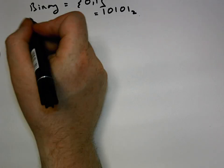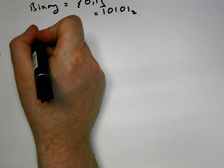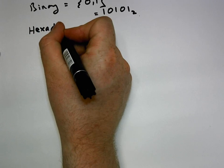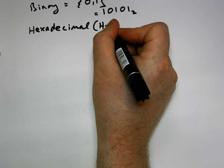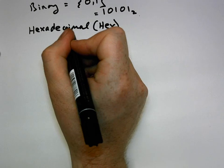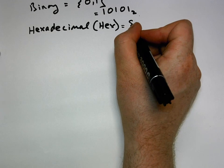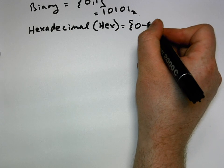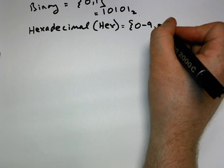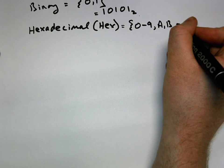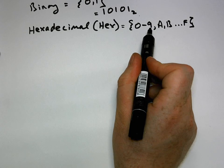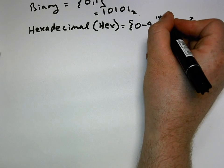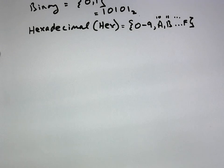But in computer science we have other number systems that we would use quite regularly. One of those systems is the hexadecimal number system. So the hexadecimal number system, we call it hex. And that's simply made up with an alphabet that runs from zero up to nine, just like the decimal number system, and then it goes from A up to F. Where zero up to nine stays the same, A would be ten, B is eleven, and so on.